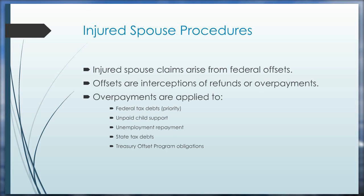Overpayments are first applied to federal tax debts, with trust fund obligations going first within that category. After federal tax debts, unpaid child support is the second priority. Then — not in strict priority order — excessive unemployment compensation, state tax debts, and other treasury offset program obligations follow. This is where the entire problem of injured spouse originates. From a procedural standpoint, it's really best to contact the IRS before an offset occurs. In my seven years of doing this, I have never had an injured spouse situation where the client didn't already know about it — there are always prior notices or court proceedings.